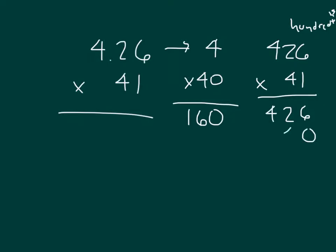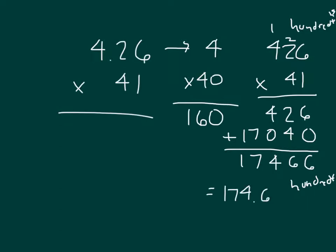4 times 6 being 24, 4 regroup a 2, 4 times 2 being 8 plus 2 being 10, 0 regroup the 1, and 4 times 4 is 16 plus 1 is 17. Carefully adding those together. When I convert this back over into standard form, I would get 174.66.